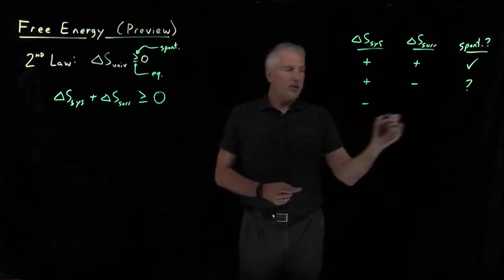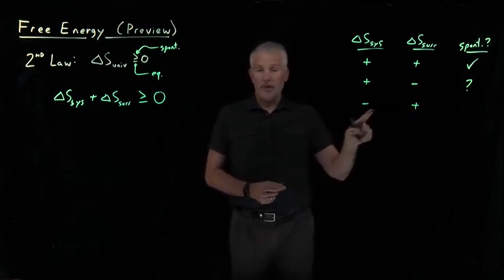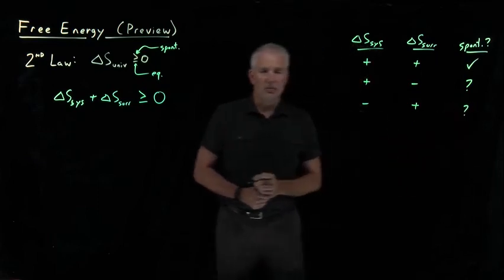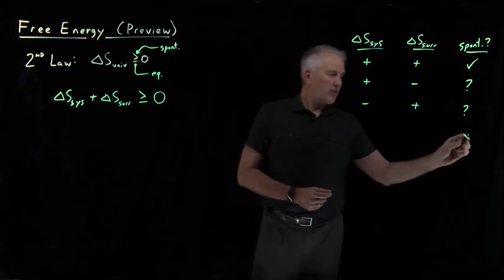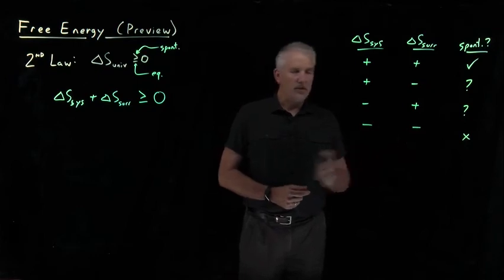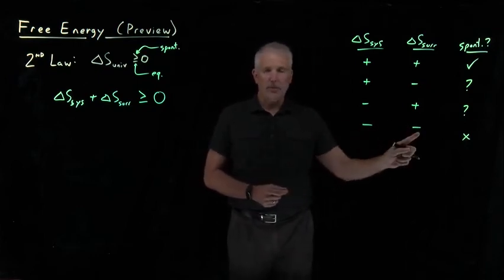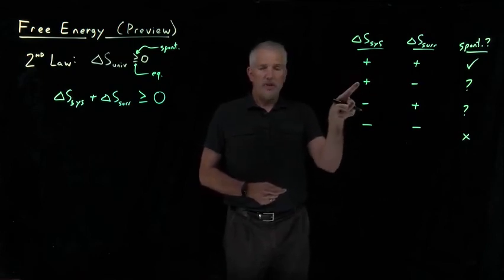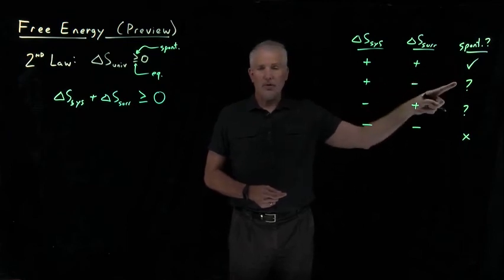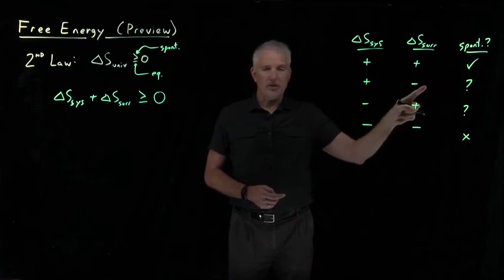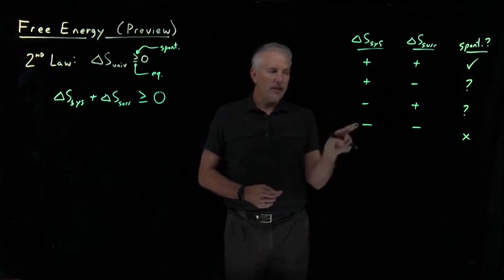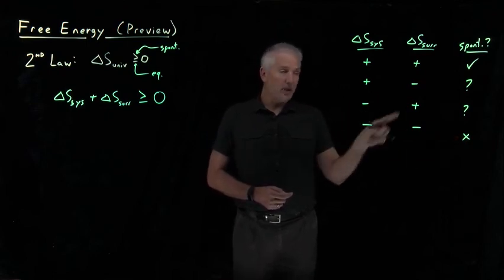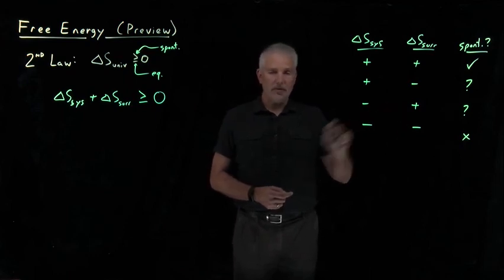Likewise, if the system is losing entropy but the surroundings are gaining entropy, perhaps they're gaining more than the system lost — making it spontaneous — or perhaps less, making it non-spontaneous. So it might or might not be spontaneous. The only time I know for absolute certain a process is not spontaneous is if both the system and the surroundings are losing entropy — then however I add those two numbers, the sum is negative. This illustrates that knowing only the system's entropy change is not sufficient; it's the sum of the two that matters.